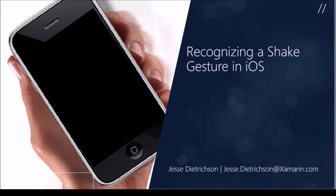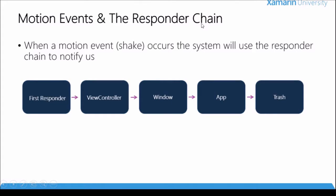Before we get started we have to have an understanding of what the responder chain is. Basically, when some type of motion event occurs like a shake gesture, we're going to get notified about it through the responder chain. Now the first thing in the chain is the first responder — basically an object that's saying it wants to be notified about when some type of motion event occurs. If the first responder does not actually listen for those events, that event will get forwarded through the chain.